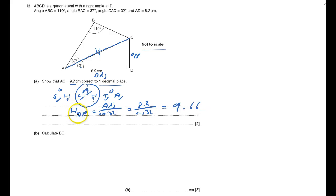So, cos of the angle, which is 32, which is 8.2 over cos of 32, and that equals 9.669262908. It wants to one decimal place, so it's got to be one number after the decimal point. The next number is six, so I round up, so I get 9.7, and that's what I had to show. Great, two marks.